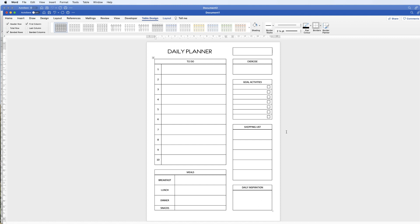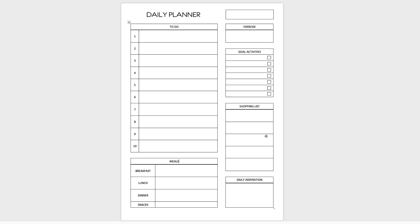In today's Microsoft Word tutorial I'm going to show you how to make this daily planner in Word. I've included many of the things you'll need to mark out your daily activities: a to-do section, the meals you wish to plan, the day, the exercise you wish to participate in, your goals activities, a shopping list, and a daily inspirational area for a daily quote.